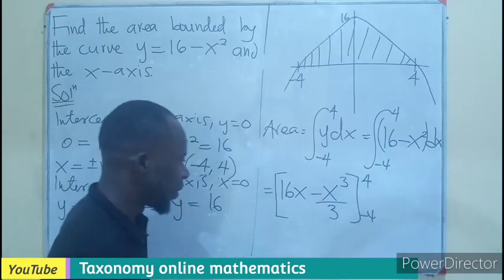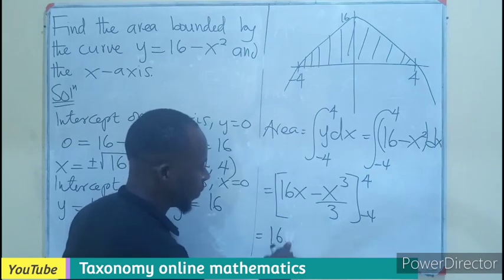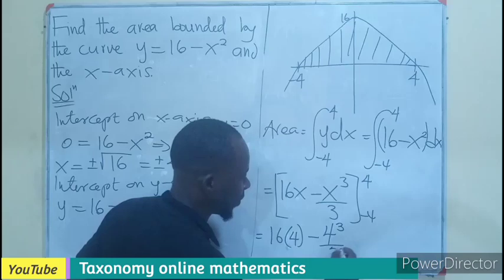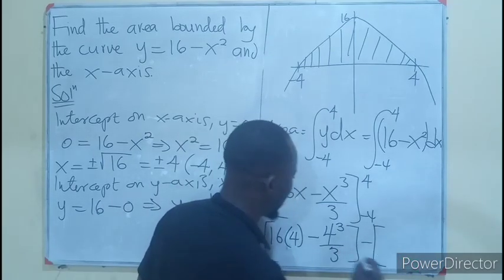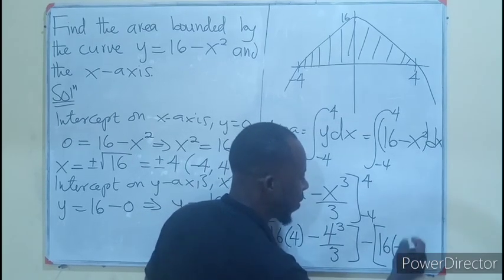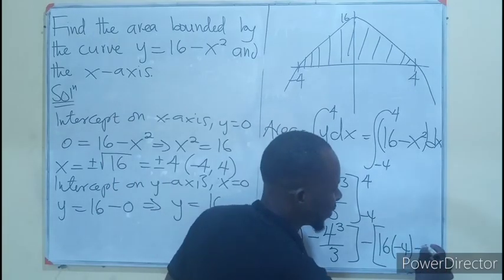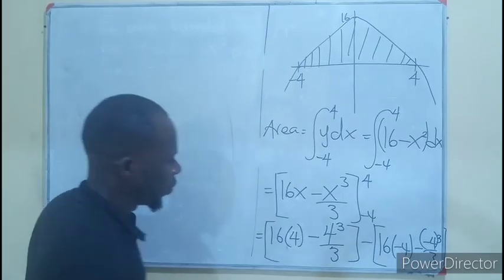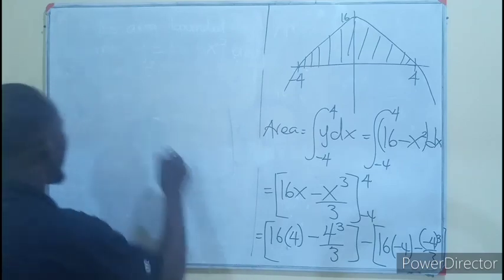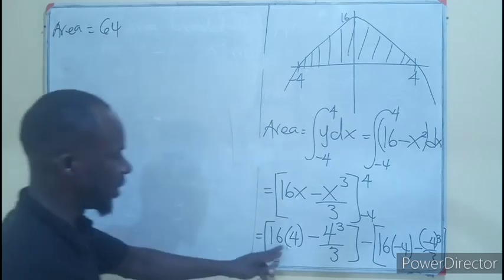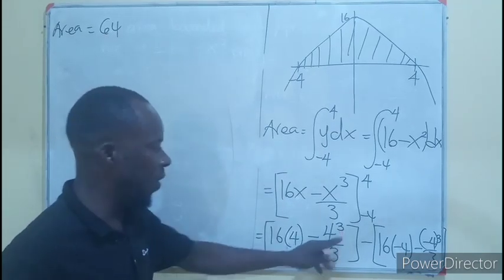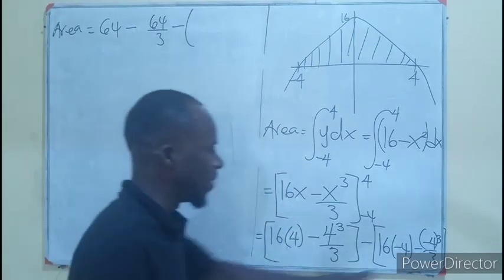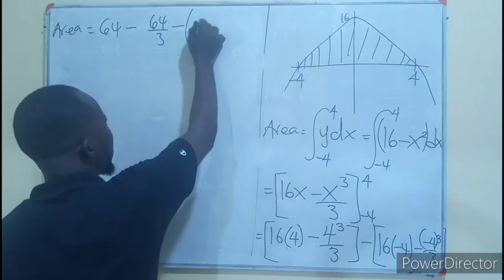So now using the upper limit, we are going to have 16 times 4 minus 4 to the power 3 over 3. So 16 times 4 will be 64. So area is going to be 64 minus 64 over 3, then minus the lower limit which would be 16 times negative 4 minus negative 4 to the power 3 over 3. This will give you negative 64.